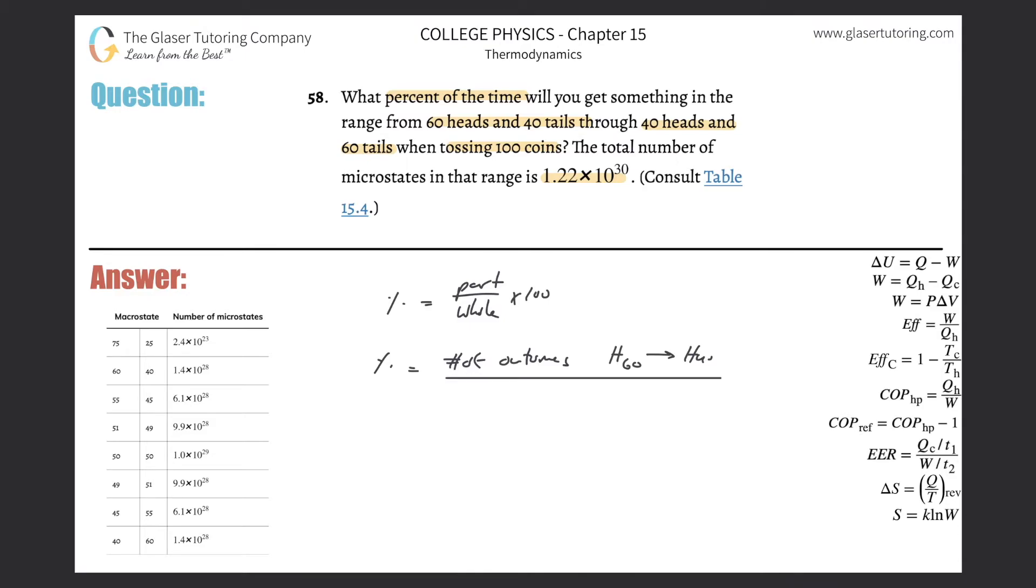So that would be the number of successful outcomes, divided by the whole, which is the total number of outcomes.